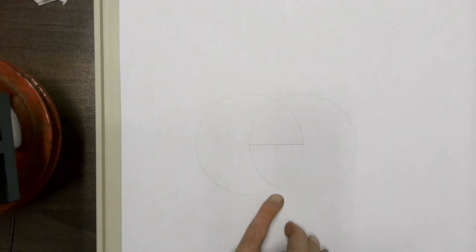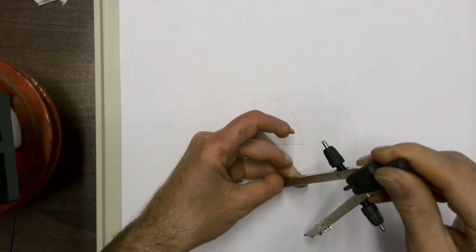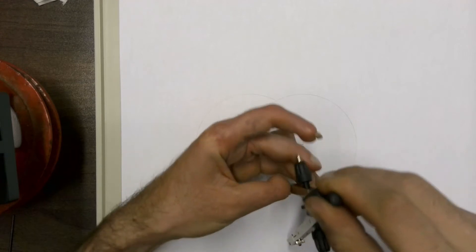Then, where your two circles come together at the bottom—the intersection point—place your compass and draw another circle.